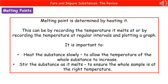When carrying out this experiment, there are a couple of key points to bear in mind. First, heat the substance slowly — this allows the temperature of the whole substance to increase rather than just part of it. Second, stir the substance as it melts, which ensures the whole sample is at the same temperature rather than having hot spots and cold spots.